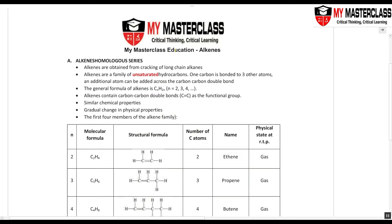The next homologous series we are going to look at is the alkenes. 'Ane' is the carbon-carbon single bond; 'ene' is the carbon-carbon double bond. Alkenes are obtained from cracking of long-chain alkanes. Long-chain alkanes are lower in demand and high in supply, so we crack them — break them up into smaller alkanes, alkenes, and hydrogen gas.